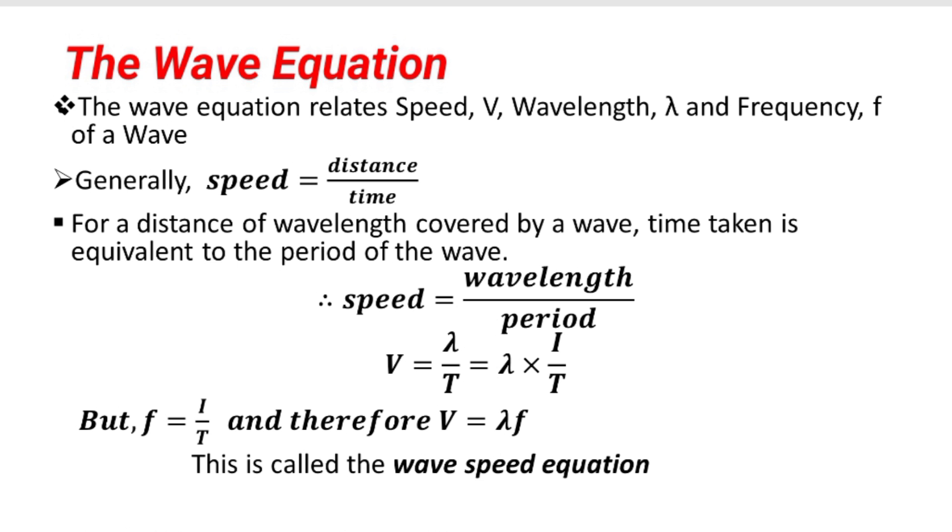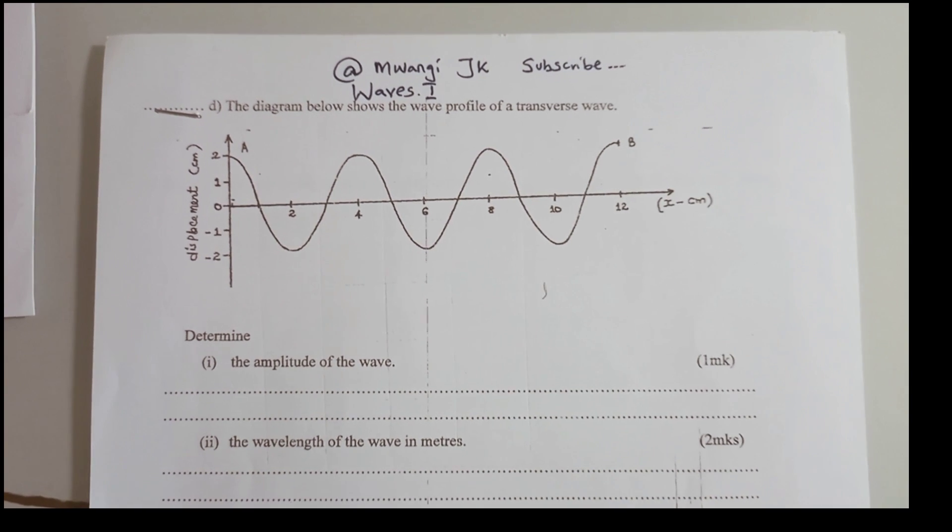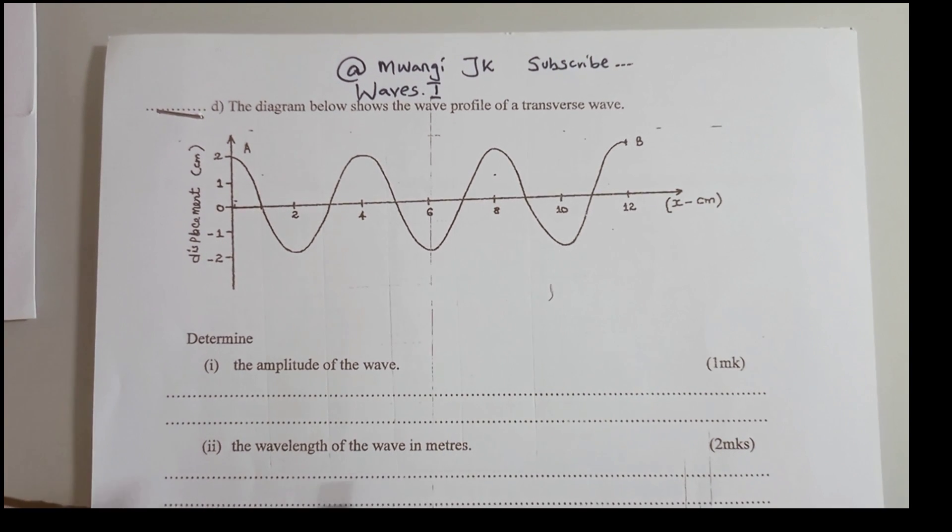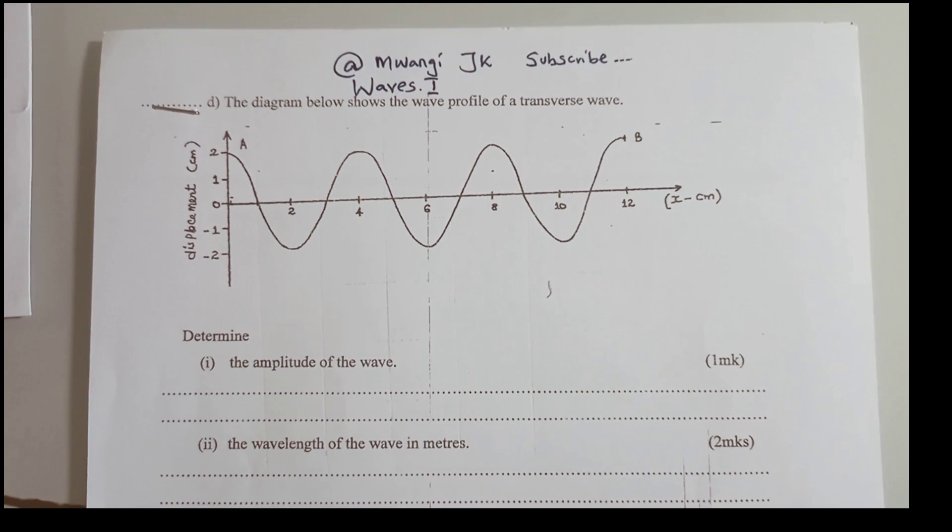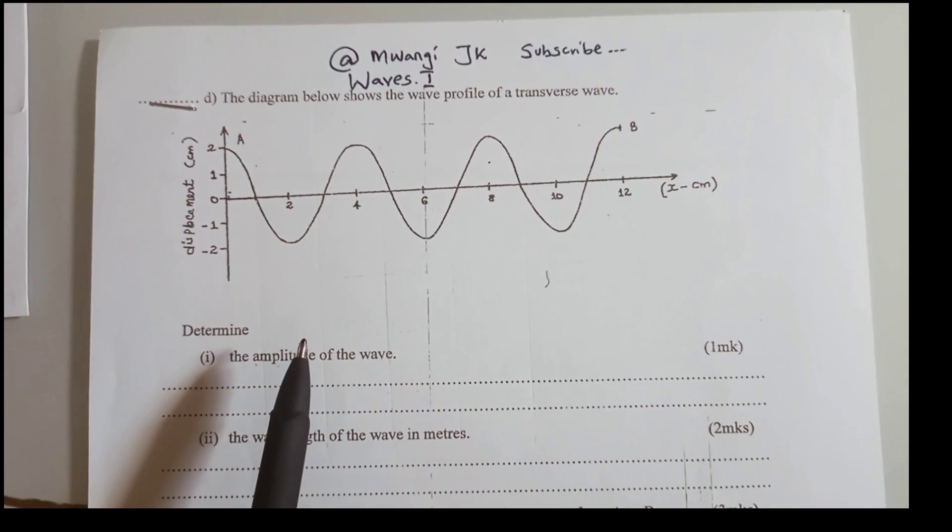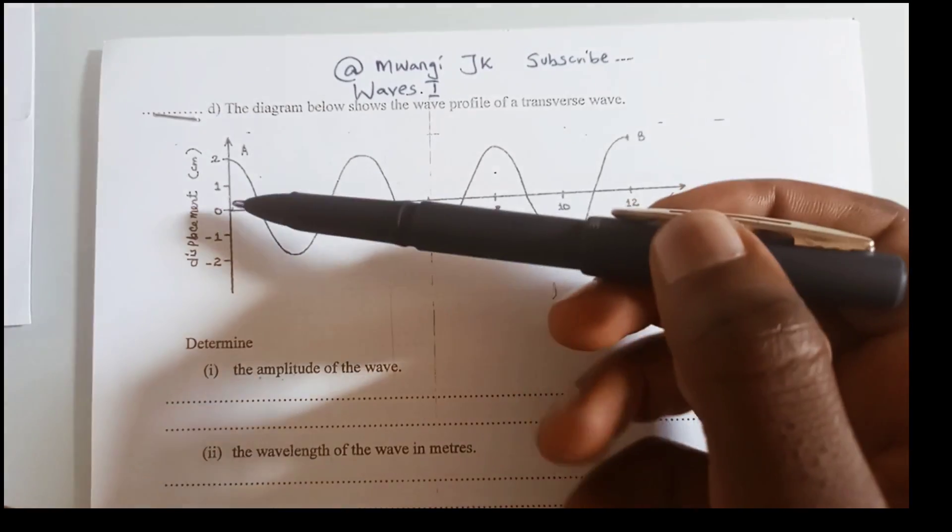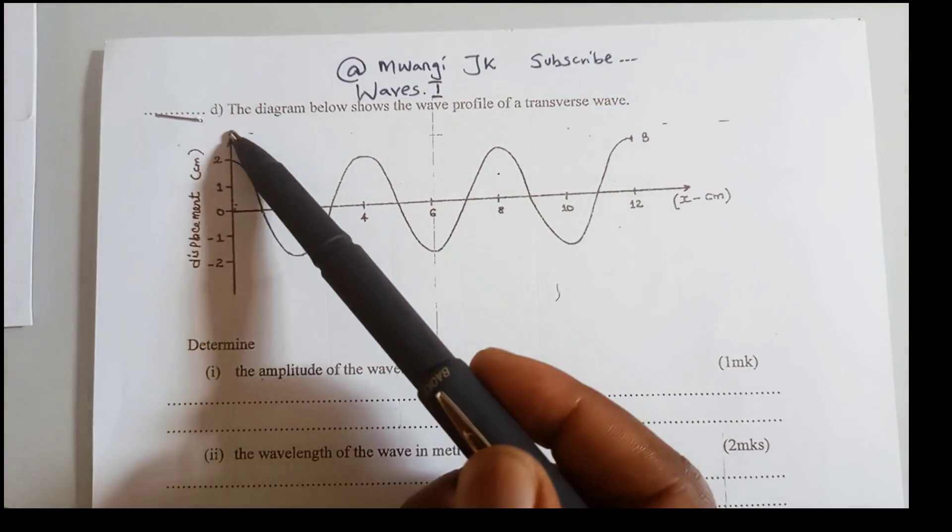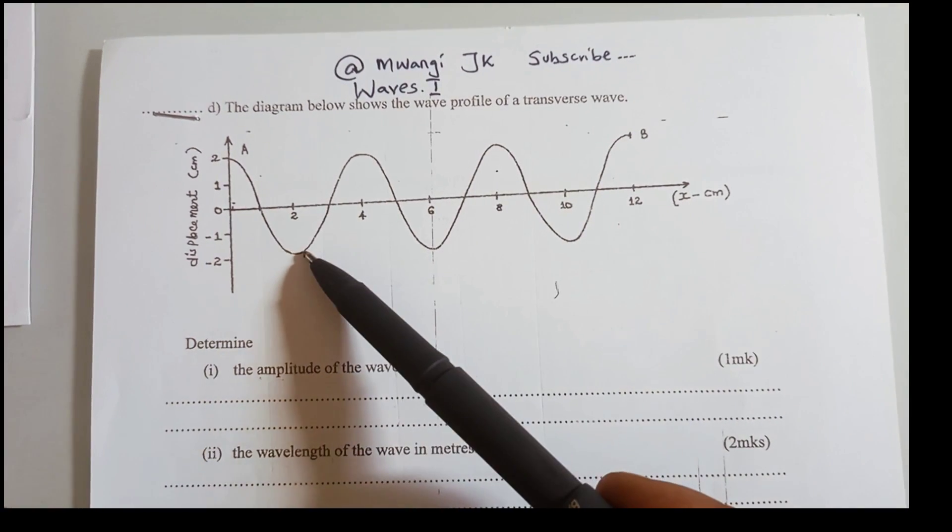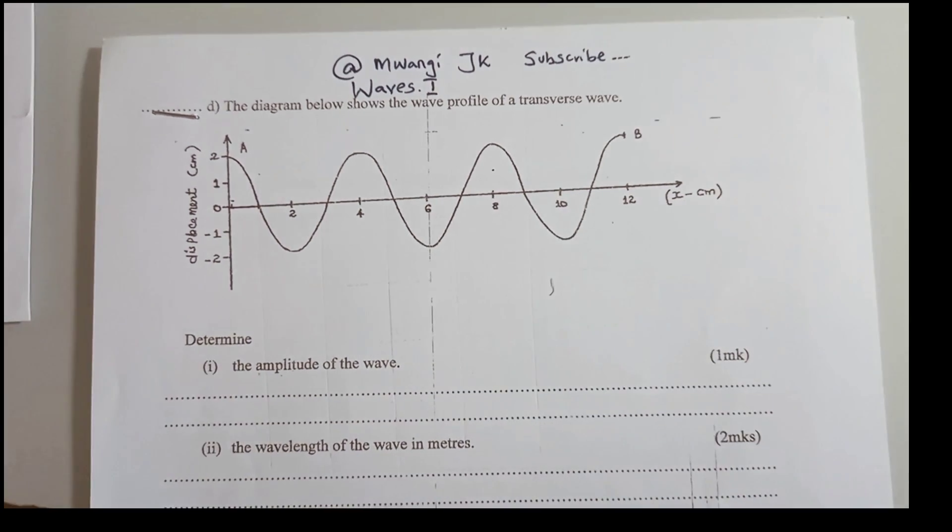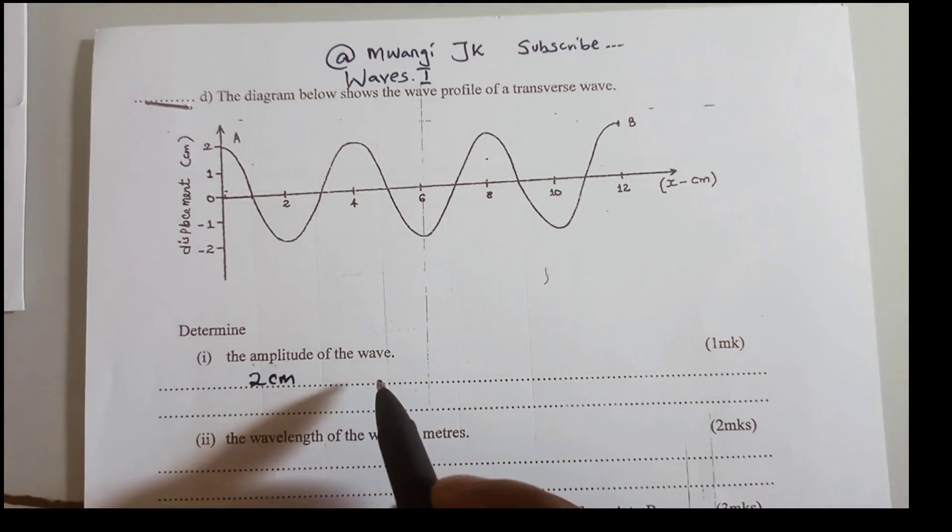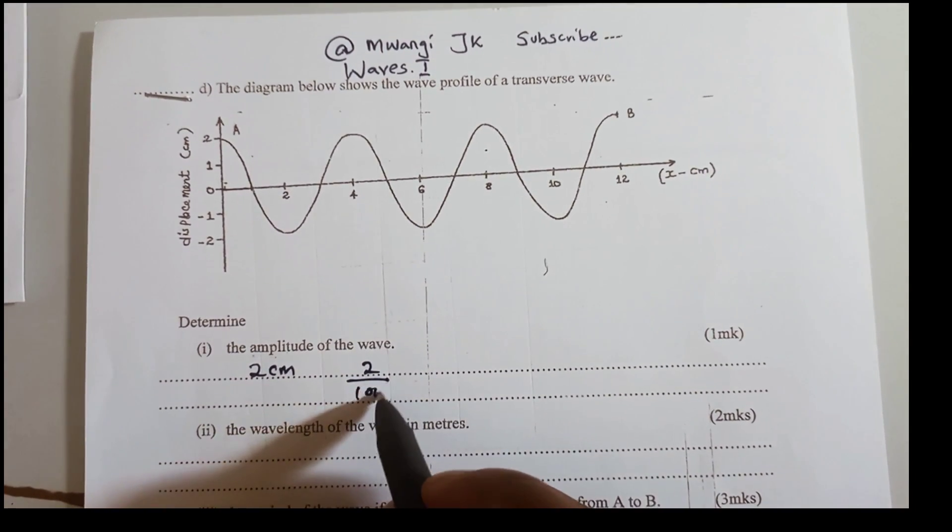Now, getting back to our question, we try and answer this question. The diagram below shows the wave profile of a transverse wave, determining the amplitude of the wave. We said the amplitude is the maximum displacement from the mean position. The maximum displacement for this case is 2 centimeters. If you look at the negative side, you have negative 2, but we can't take the negative side. So, we have 2 centimeters, so we divide this by 100, to write it into the SI unit, and we get 0.02 meters.